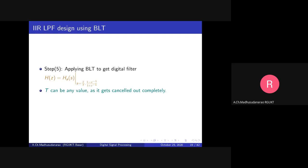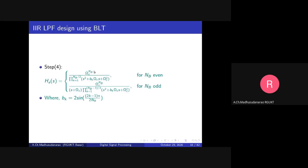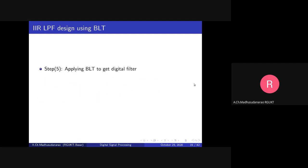T can be any value because it gets cancelled out completely. When we substitute s = (2/T) × (1 - z^-1)/(1 + z^-1) into these expressions, T appears in both numerator and denominator and cancels out entirely. For convenience we can take T = 2 so that the 2 also cancels, giving us simply s = (1 - z^-1)/(1 + z^-1).